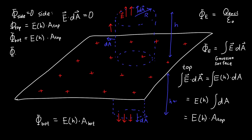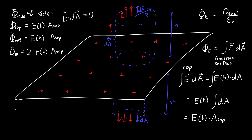So our total flux phi_E is the sum of all three contributions: zero from the side, plus E(h) times A_top from the top, plus E(h) times A_top from the bottom — giving us two times E(h) times A_top. It's really important to add up all the flux, because Gauss's Law is only valid when we account for the flux out of the entire surface. A common mistake is to miss either the top, the bottom, or the sides.